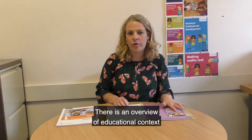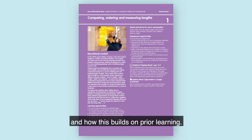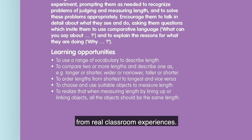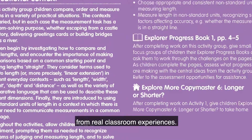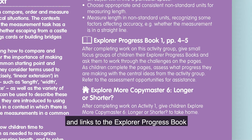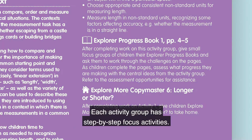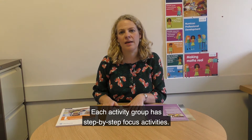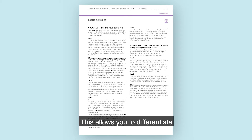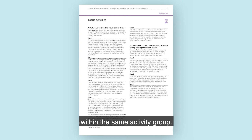There is an overview of educational context and how this builds on prior learning. The learning opportunities are taken from real classroom experiences. There are also assessment opportunities and links to the Explore a Progress book and the Explore More copy masters. Each activity group has step-by-step focus activities, starting with low threshold activities and building to high ceiling activities. This allows you to differentiate for every child in your class within the same activity group.